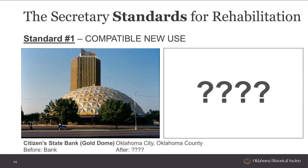The Citizens State Bank, more commonly known as the Gold Dome, is an example of a property that is more difficult than others to find a compatible new use for. The interior space is almost as significant as the exterior and was designed in a way that is difficult to rehabilitate into anything other than a bank or other open commercial space with adjoining offices. Hopefully soon, a new developer will purchase the building and be able to install new programming that is compatible with its unique architecture.